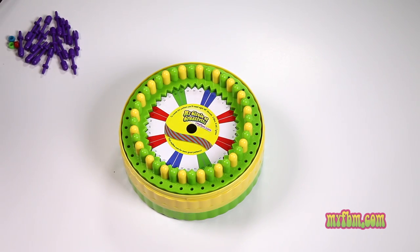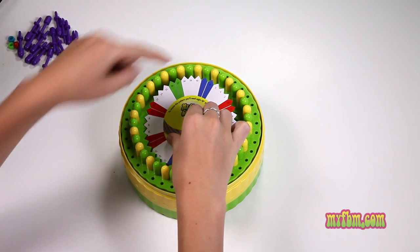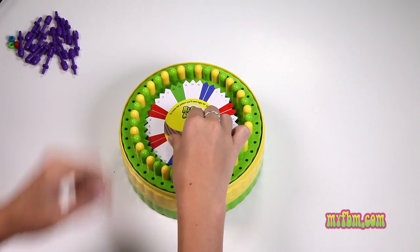Today I'm going to show you how to use my circle of creativity. First, pick your pattern disc and align the number one at the top with the number one on the wheel.